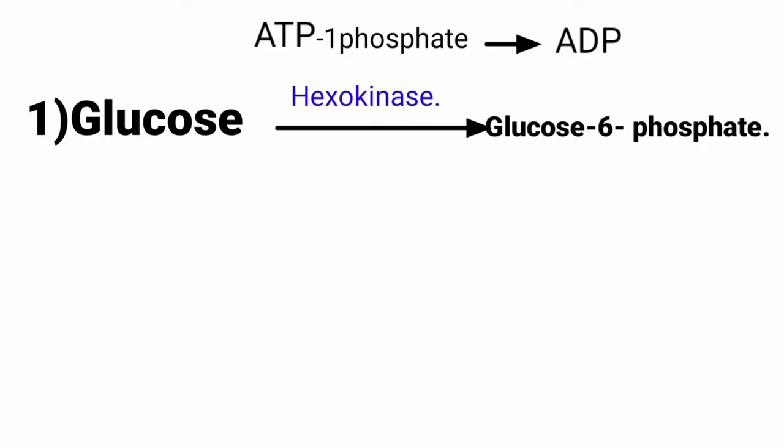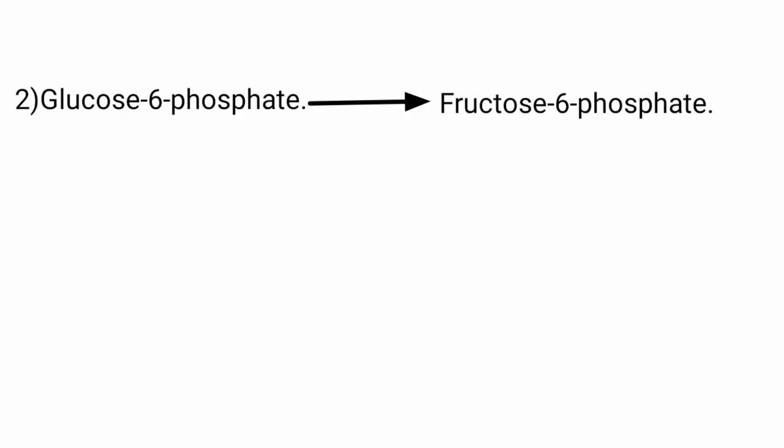Now the second step. Glucose-6-phosphate is converted to its isomer, fructose-6-phosphate. Glucose-6-phosphate has a ring structure, and the phosphate that was attached in the first step is repositioned.